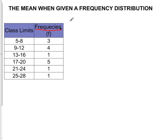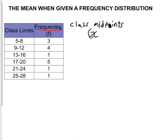The other thing that we need for the formula are the class midpoints, so let's find the class midpoints. We've done this already for this frequency distribution in a previous video. In the formula, the class midpoints are going to be referred to as the X's. This is the only formula, other than the standard deviation for a frequency distribution, where we use X to represent the midpoints of the classes.